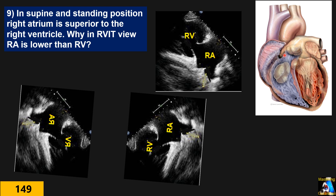Question 9: in a supine position, understanding heart orientation — especially the right atrium and right ventricle. The right atrium is superior to the right ventricle, as you can see here. The IVC we usually see like this, with a little change based on probe position. You have to explain to me why we don't see it this way or that way.